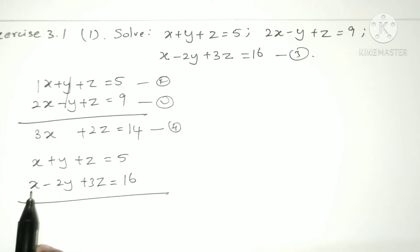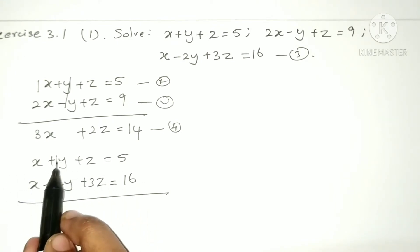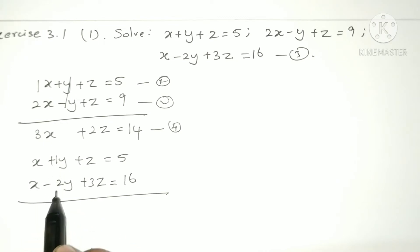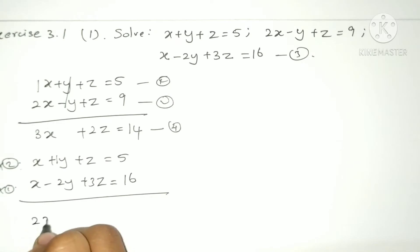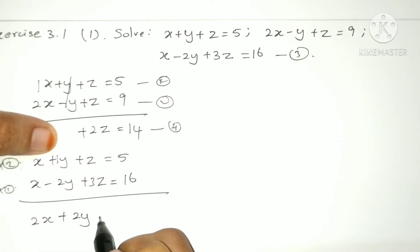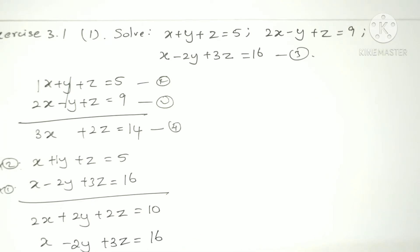We change the sign of equation 1 — we multiply through by 2 to match the y terms. So 2x plus 2y plus 2z is equal to 10. Then we cancel directly. We get 3x plus 5z equal to 26. This is equation 5.